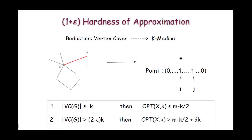Here m denotes the number of edges in the graph. It is known that in bounded degree graphs k and m are linearly related, therefore the term (m minus k)/2 plus delta*k can be rewritten as (1 plus epsilon) times (m minus k)/2. This gives a constant factor gap between the yes instances and the no instances, and this gives a (1 plus epsilon) hardness of approximation for the Euclidean k-median problem.